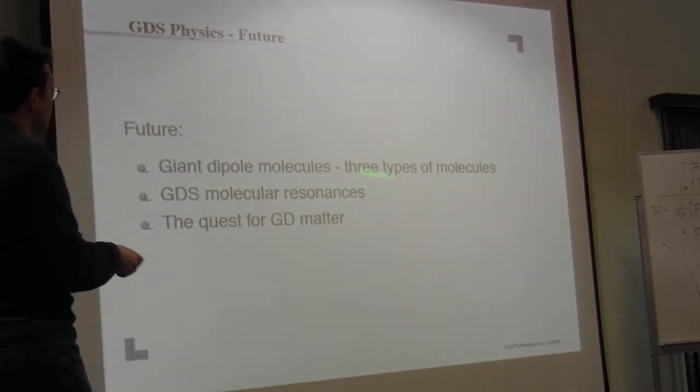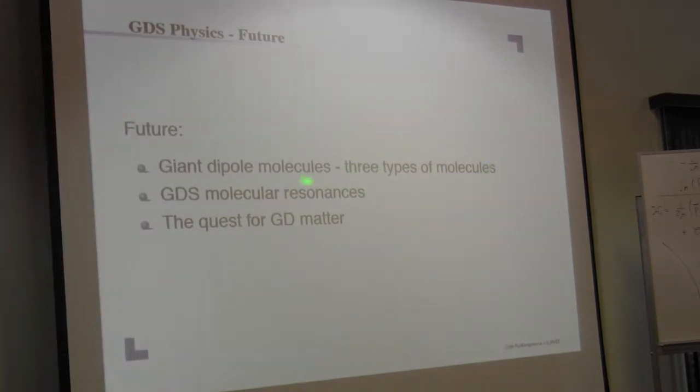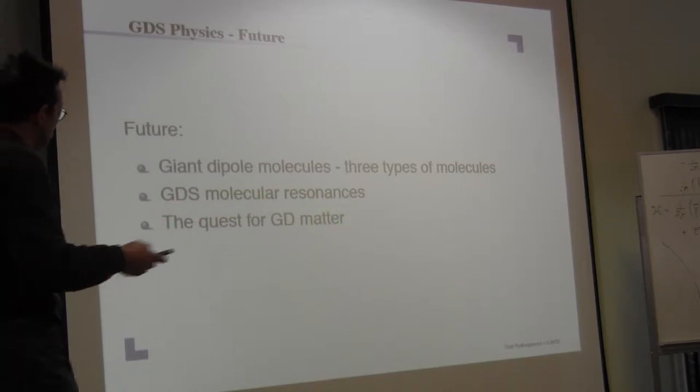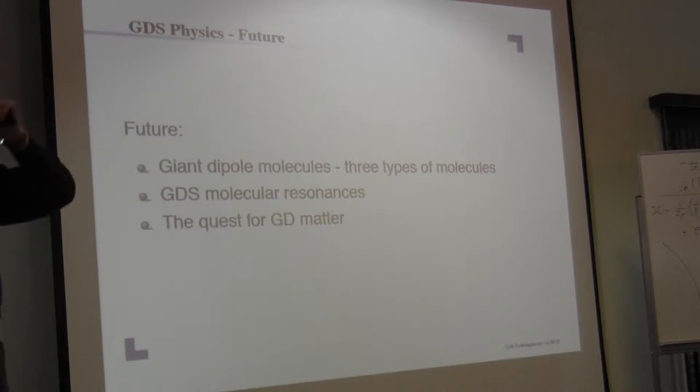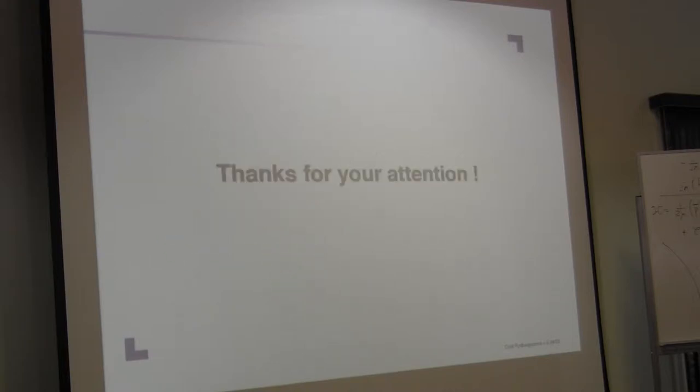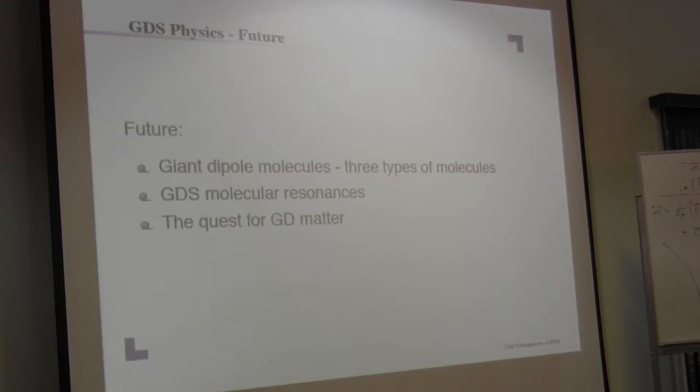That question can be answered positively in mind. There's actually three types of molecules. There's also more resonances. Can we make out of these giant dipole atoms by putting them together something like giant dipole matter? Dilute matter of course because you don't want to bring them closely together. Otherwise this is all kind of ending up in an explosion. But these are open questions.